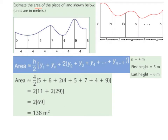The y1 is always the first height, so in this case it's 5. The yn is always the last height, and the last height in this case is 6. Then 2 times y2 plus y3 plus y4 plus dot dot dot plus yn minus 1 is basically all the other in-between heights — anything that's between the first and the last one.